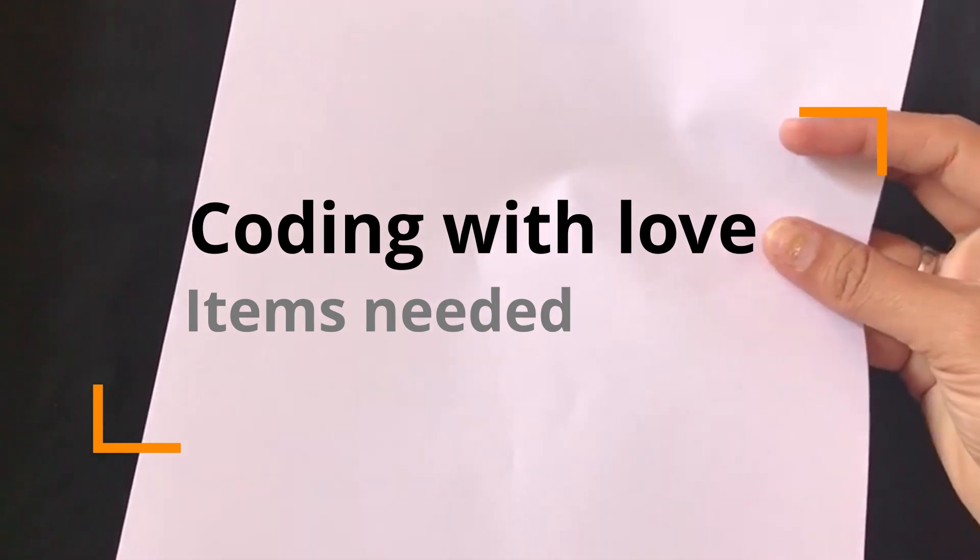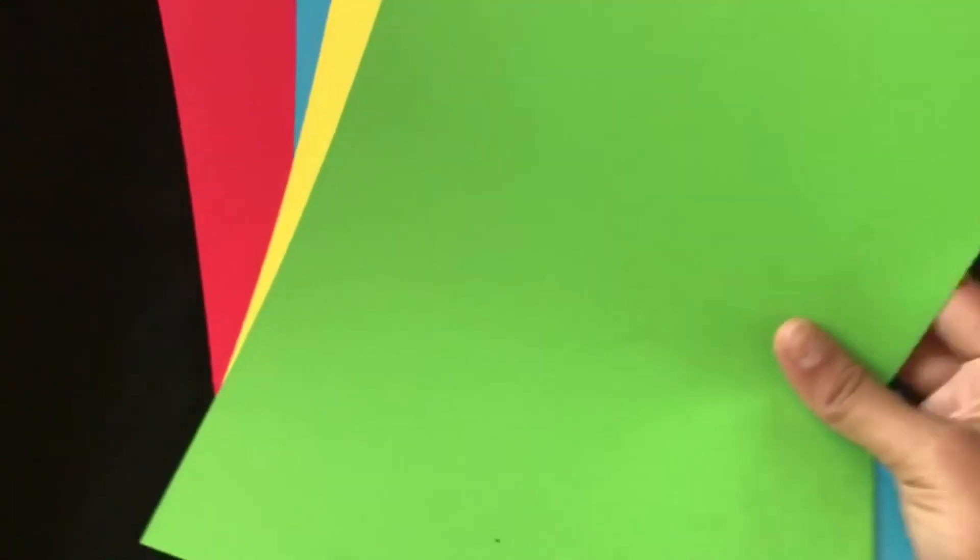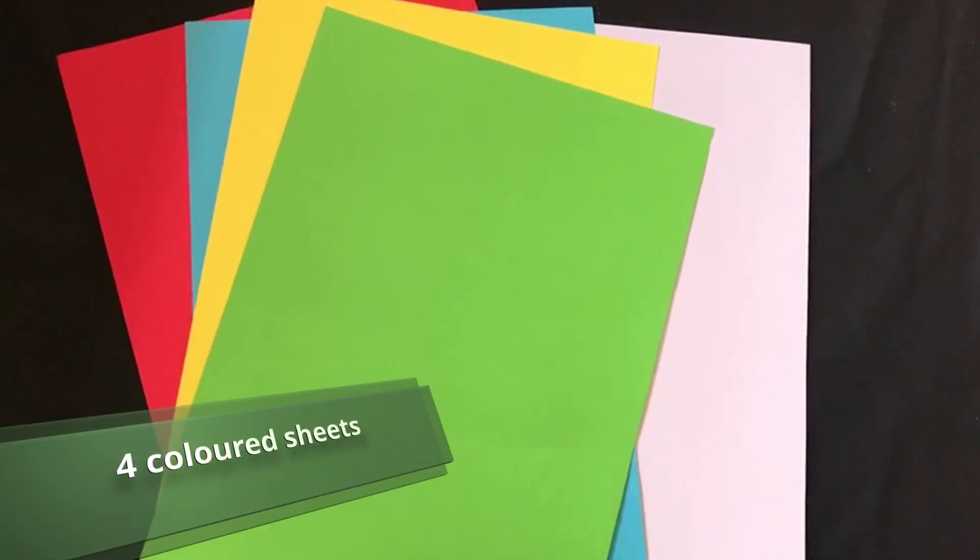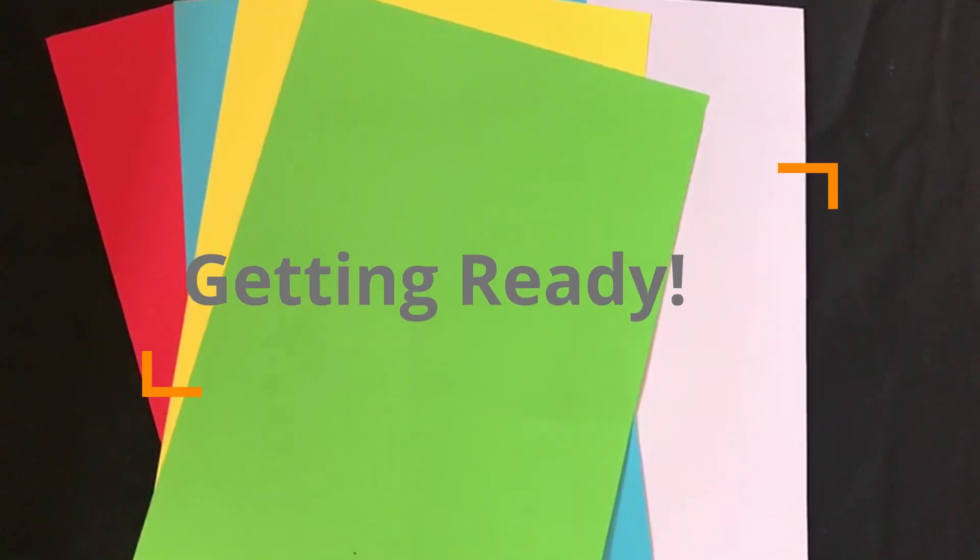Let's look at the supplies that we need. We need a white A4 sheet, four different colored sheets for heart-shaped cutouts, and a pen or a pencil. And we are ready to go.